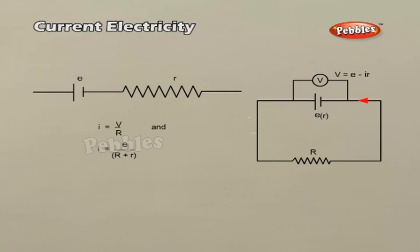If an external resistance R is connected across the two terminals of the cell, current flows through both the external resistance R and internal resistance r. Due to the current flow, there is a potential drop of Ir across the cell. As a consequence, the terminal voltage becomes V equals epsilon minus Ir. An ideal cell has no internal resistance, that is r equals zero, but an ideal cell is only a concept and not possible in practice.